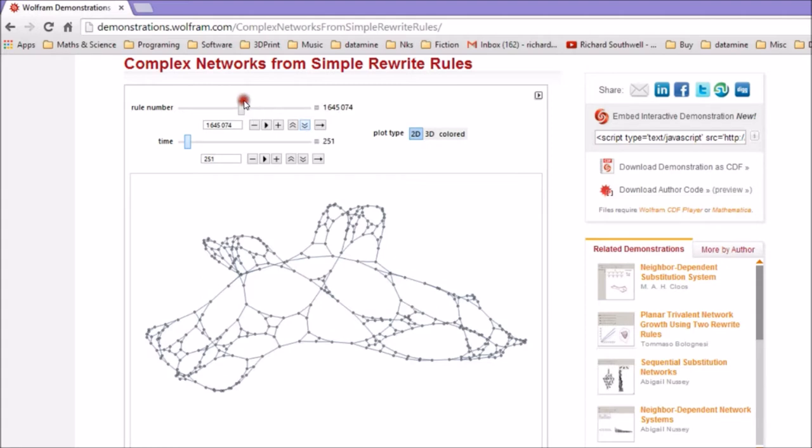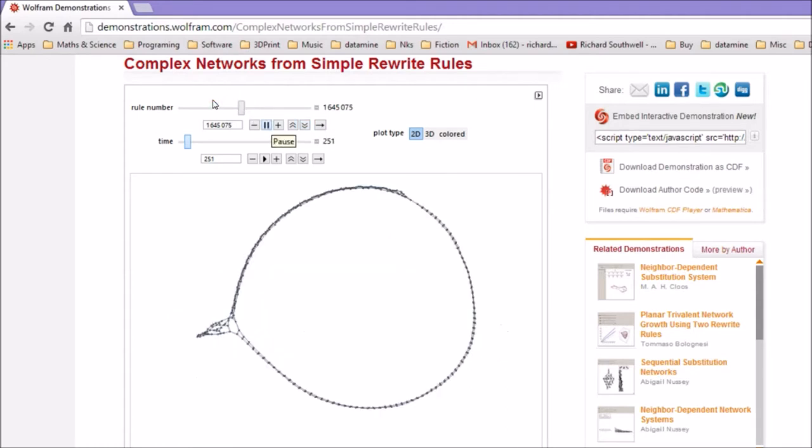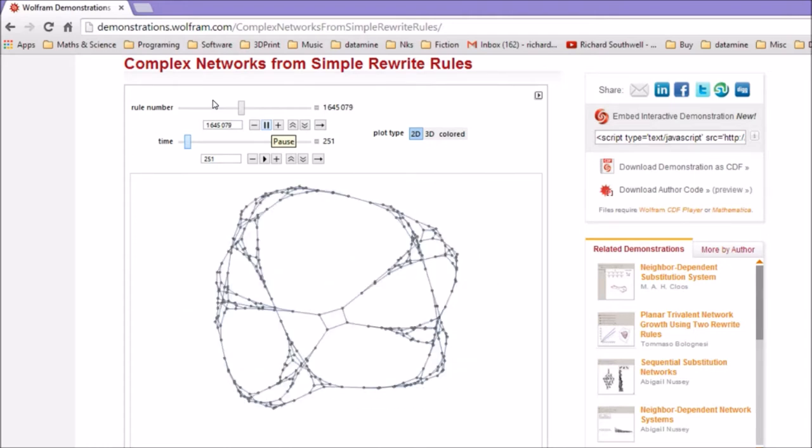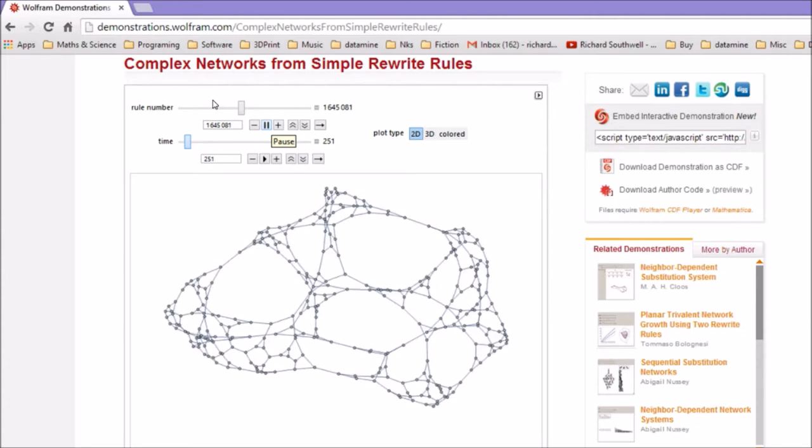And we've got to press this slow down button about a hundred times, because it's based on Mathematica, and if we don't do this, then Mathematica will just go way too fast because there's so many rules in here. Anyway, there we are. You see it just evolving through and showing us pictures of all the different rules.